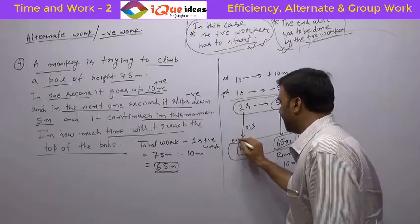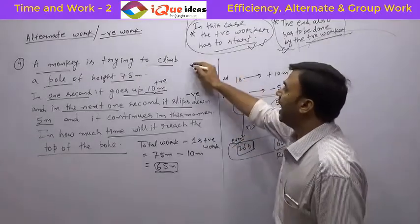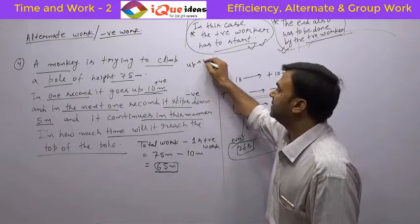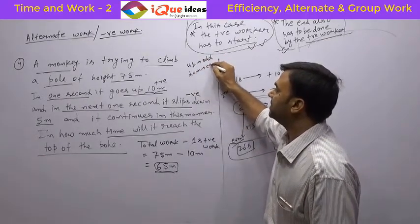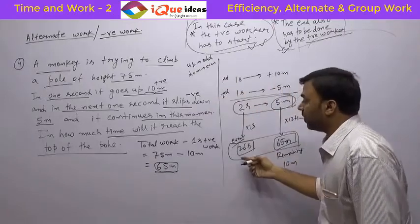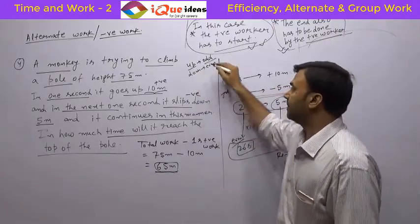26 is an even number. It has started with going up. So up is odd seconds and down is even seconds. Slipping down is even seconds. After 26, the 27th second will be up and it is odd.